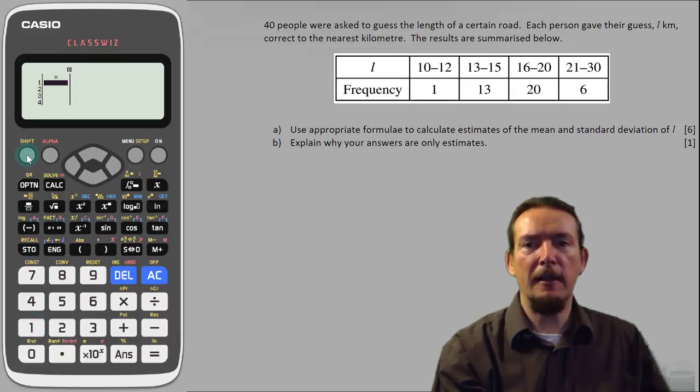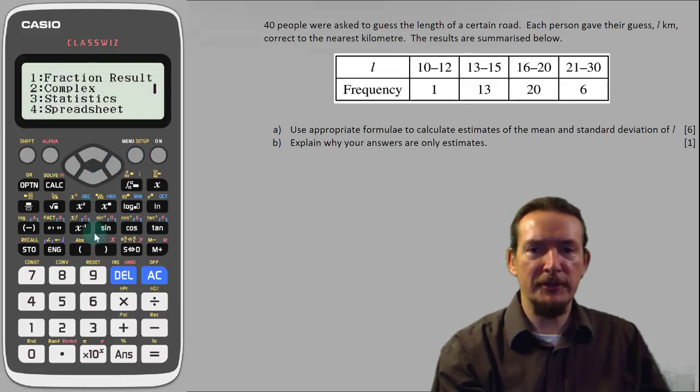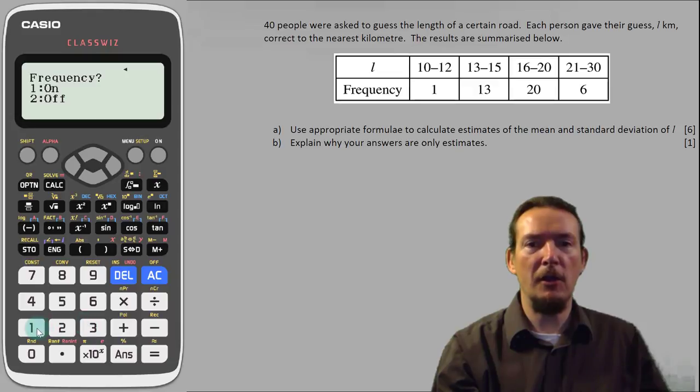We can do this easily enough by pressing shift followed by the setup key, the down arrow, and 3 for statistics. Press 1 to turn frequency on and you can see we now have the right setup for a frequency table.